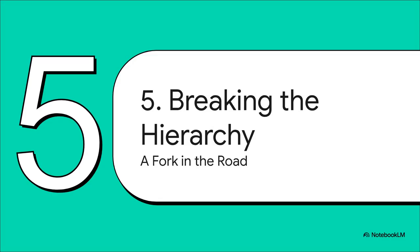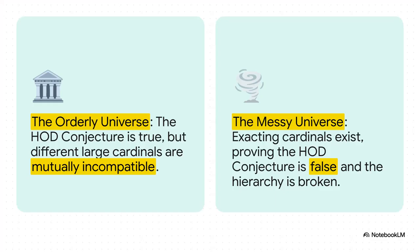So, this discovery isn't just about adding a new concept. It actually forces a choice. It presents us with two completely different, competing pictures of reality. A real fork in the road for mathematics. So, which is it? On one side, we could be living in the orderly universe we've always assumed, where that HOD conjecture is true. But if that's the case, it means these new exacting cardinals are totally incompatible with other powerful infinities we already know about, like the ones near the very top of our ladder. It would mean two perfectly consistent mathematical ideas literally cannot exist in the same universe.